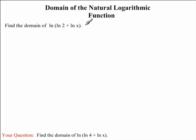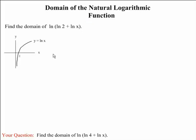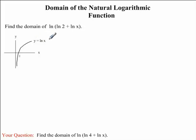Before we begin this problem, let's take a closer look at the graph of the natural logarithmic function, since this will help us in finding the domain. Here we have the graph of y equals lnx. You will notice that all x values are greater than 0 — they become very close to 0 but never equal 0. We have a vertical asymptote here. So we know that we can only take the ln of numbers that are positive, or greater than 0.